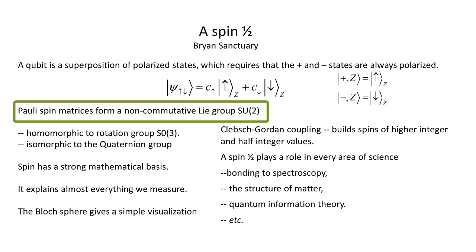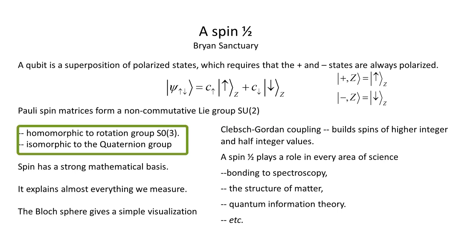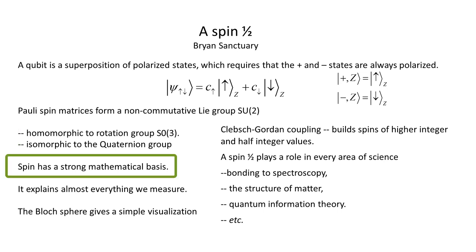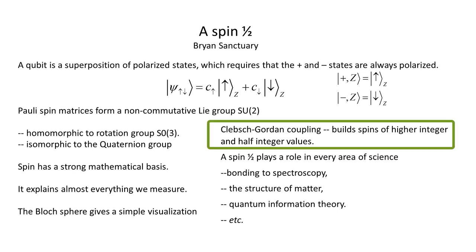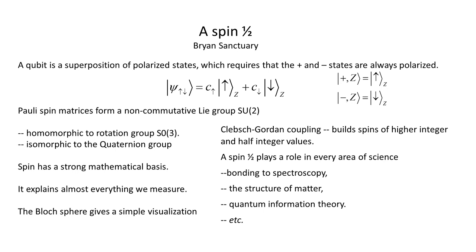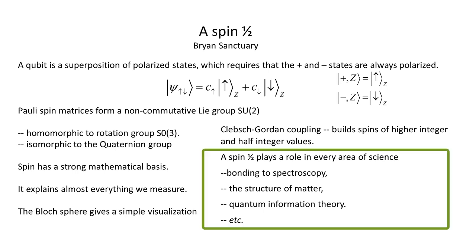Pauli spin matrices form a non-commutative Lie group, SU2. This is homomorphic, that is, it maps 2 to 1, to the rotation group, SO3, and isomorphic to the quaternion group. Spin has a firm mathematical basis. It explains almost everything we measure. The Bloch sphere gives a simple visualization. Spin is generalized to give states of different spin values using Clebsch-Gordon coupling, and this builds spins of higher integer and half-integer values. A spin one-half plays a role in almost every area of science: bonding to spectroscopy, the structure of matter, quantum information theory, and many more.